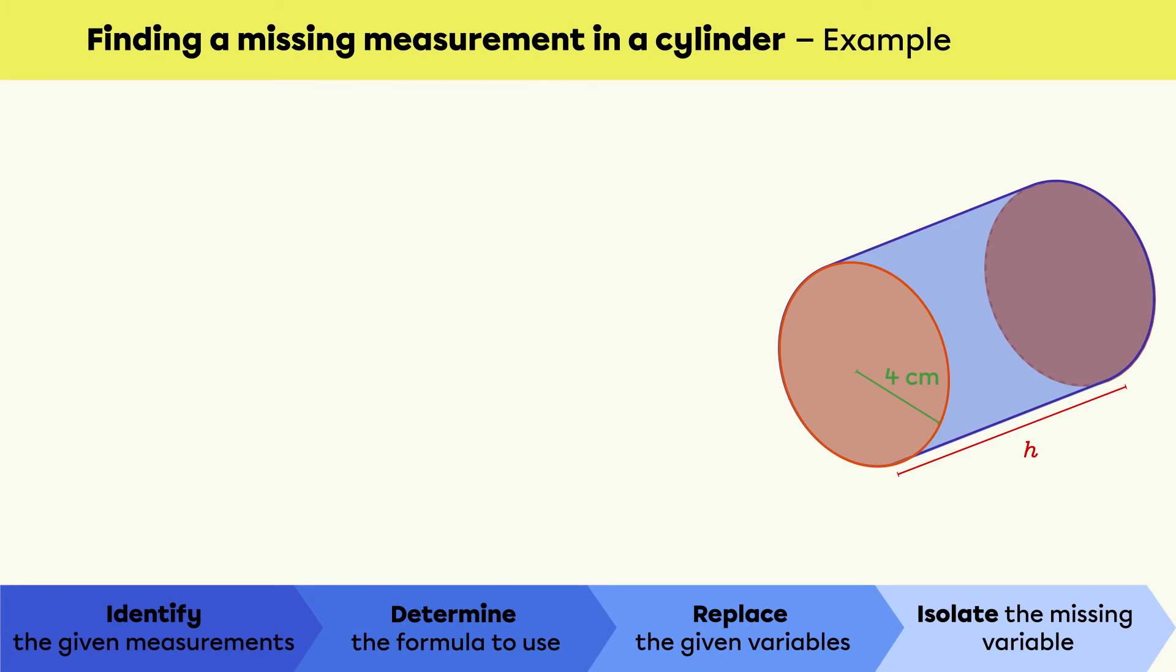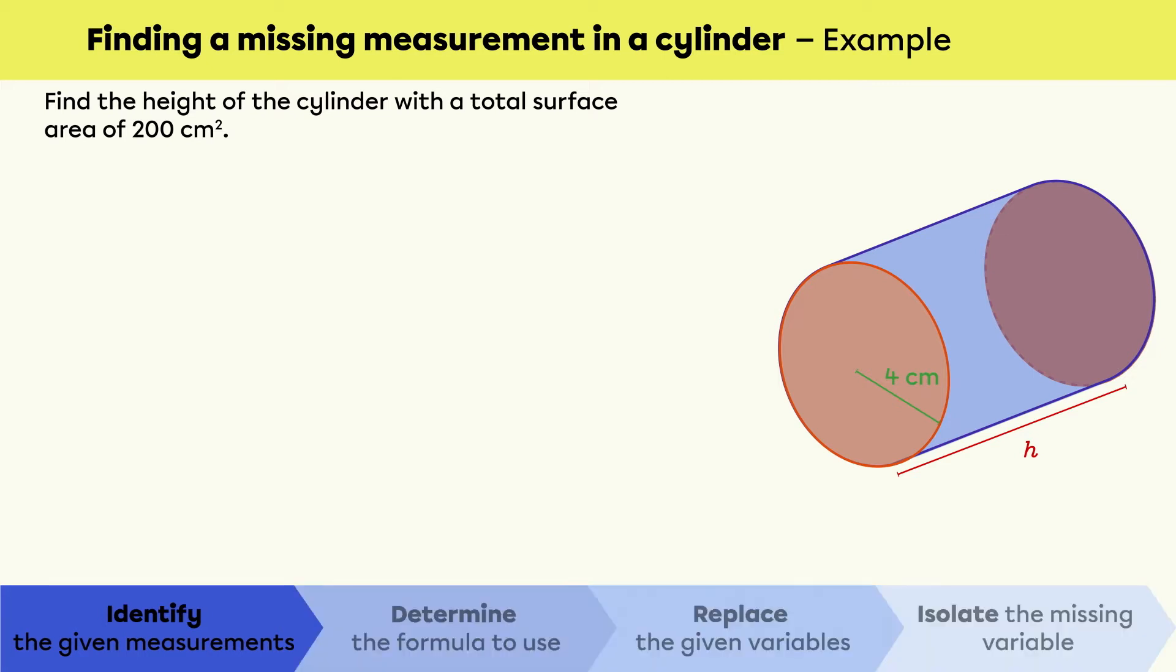Let's look at an example together. In this example, we are looking for the height of the cylinder. Begin by identifying the given measurements. The total surface area is 200 centimeters squared. The radius is 4 centimeters and h, the height of the cylinder, is the missing measurement.